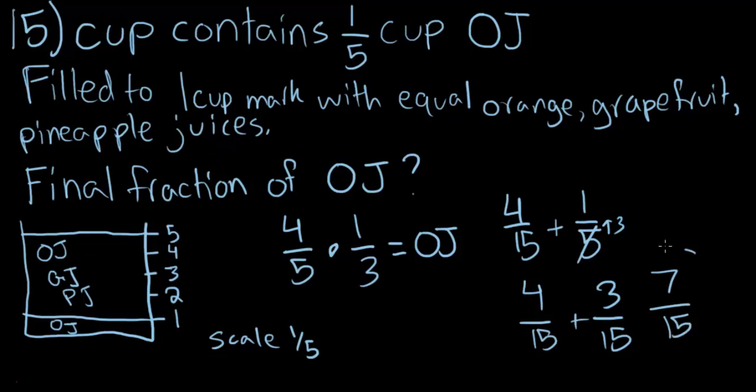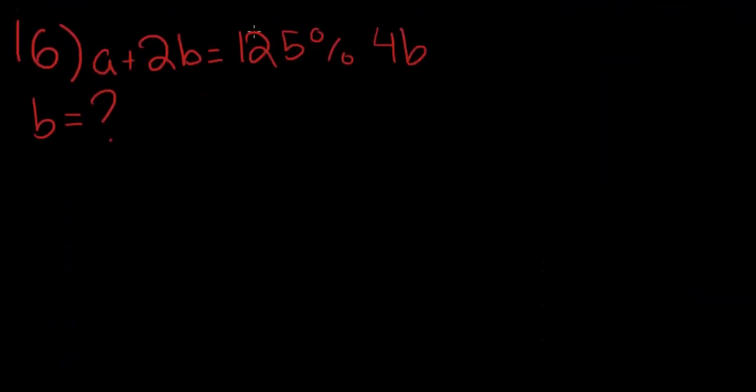Plus three-over-fifths, and we'll end up with seven-over-fifths. So, there's a total amount of seven-over-fifths cups of orange juice in the cup, excuse me, the final result. So, moving on to number 16.